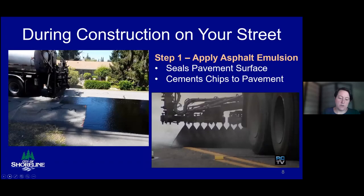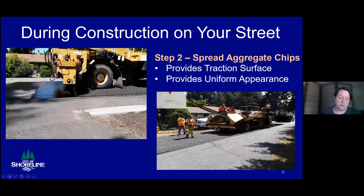Taking a closer look at each step: step one is the asphalt emulsion — it is the glue in this process. Spreading a thin layer over the entire roadway surface seals any surface imperfections and also binds new rock to the roadway. Immediately after the asphalt emulsion is sprayed on the street, the chip spreader follows and leaves a very uniform layer of rock chips on it. The rock chips provide a traction surface and protect and cushion the original street surface from wear. We chose a smaller rock chip size to provide a smoother and more uniform final surface, which is similar to new asphalt.